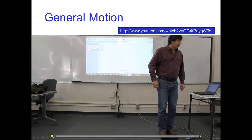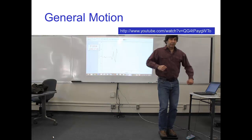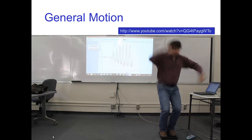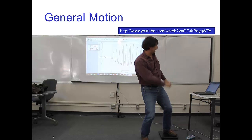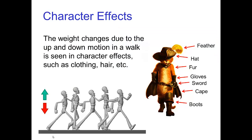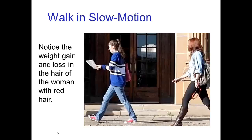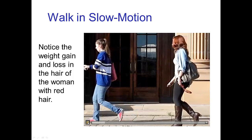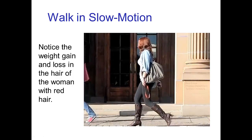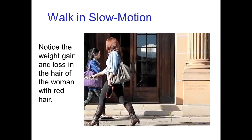Let's look at one more example — a very general motion. I wouldn't call this dancing; it's more like flailing around. Now, this variation in weight is noticeable in character effects — you see this in the character's clothing, the hair, if the character has fur, and so forth. This variation in weight is visible in these character effects. Watch the woman with the red hair — watch her hair as she's walking. Here it's in slow motion, making it easier to see those variations of her weight reflected in her hair.